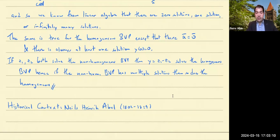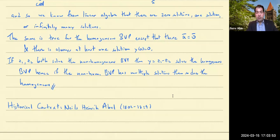Abel was sent to a poor school until the math teacher was fired after a student died from punishment. The new teacher, Bernd Holmbo, joined in 1817 and immediately recognized Abel's abilities, tutoring him privately through the works of Euler, Newton, Laplace, and Gauss. Abel's father died in 1820, leaving the family with no money. Holmbo provided financial support enabling Abel to enter the University of Christiania in 1821. Abel obtained a preliminary degree in 1822. His first papers in 1823 covered functional equations and integrals — he was the first to formulate and solve an integral equation.